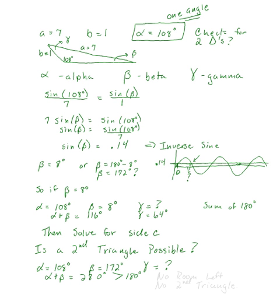So there is no second triangle possible, because there's no way to form a triangle with 108 and 172 degrees — there's no room left for gamma; we're already over the limit of 180 degrees. I didn't test anything, I didn't memorize anything — I just tried it. If there had been room for that third angle gamma after adding alpha and beta together, I would have gone ahead and solved that second triangle. But there's no room for gamma to reach 180 degrees, so I'm done — there's one triangle. You still have to solve for side C, but we only have that one triangle possible.